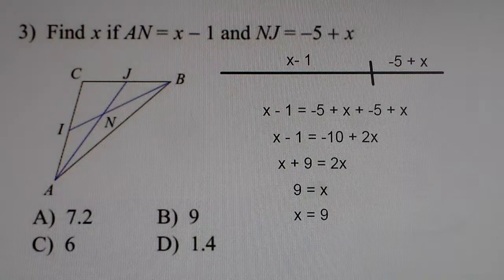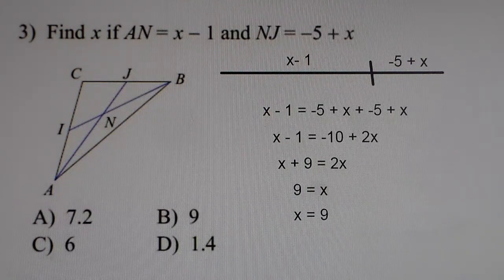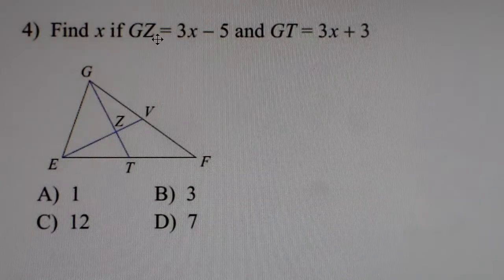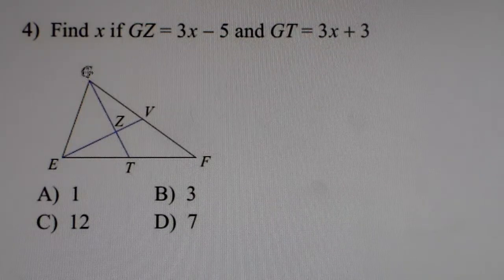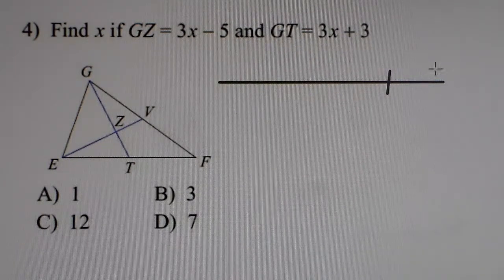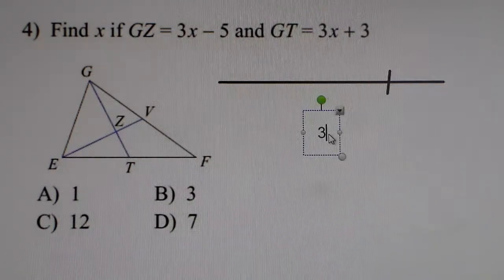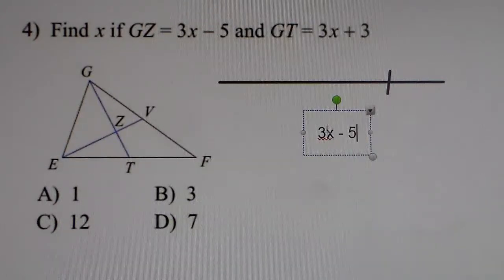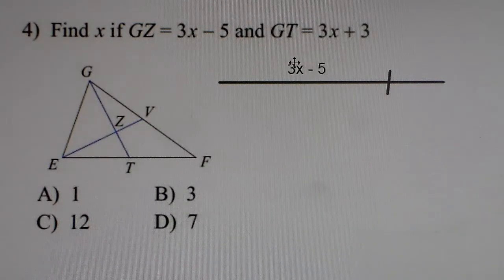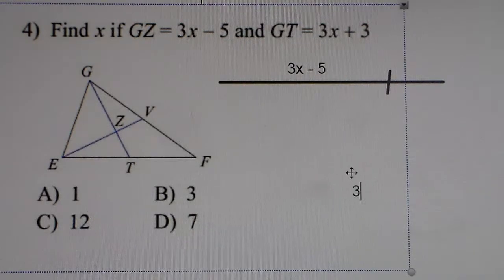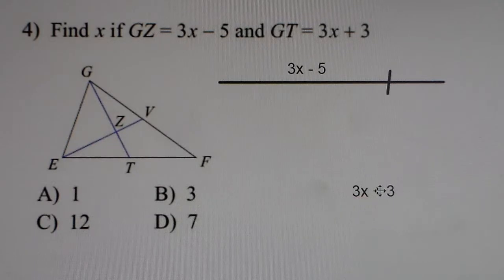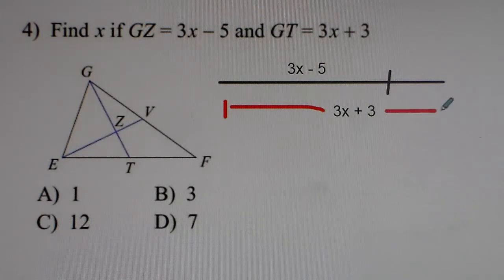That's how you do problem number 3. Now problem 4 says: find x if GZ, the 2-thirds part, is equal to 3x minus 5, and GT, the entire line, is 3x plus 3. On the number line, the big piece is the 2-thirds and the small piece is the 1-third. GZ is the 2-thirds part, so that's 3x minus 5. GT is the entire line — all the way from left to right — so that's 3x plus 3.